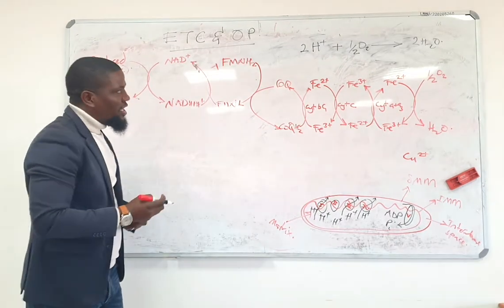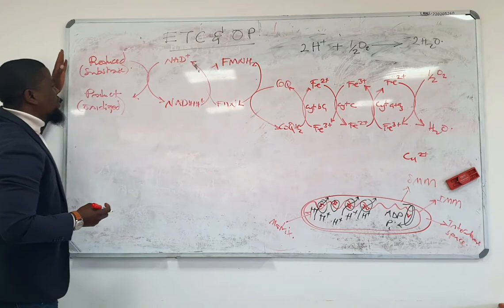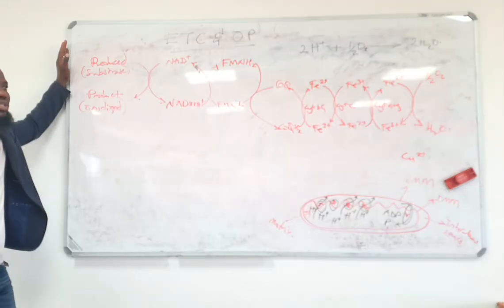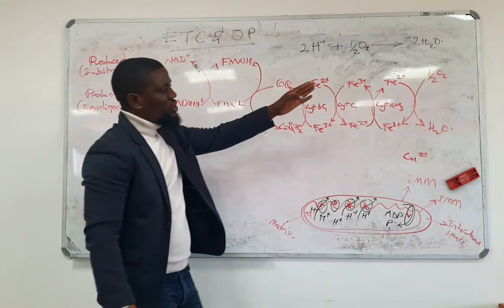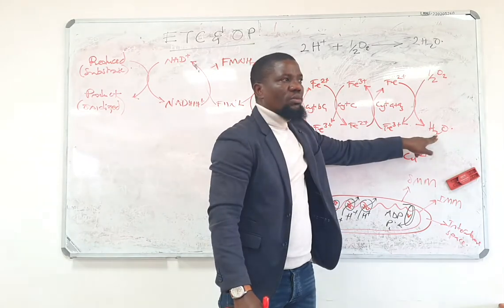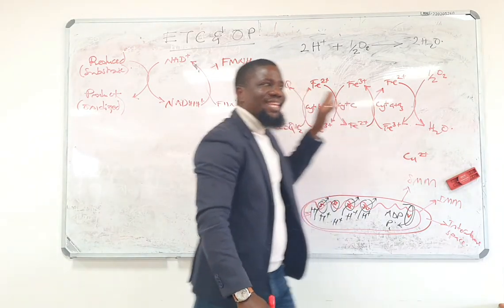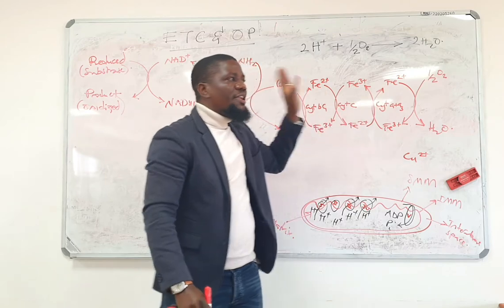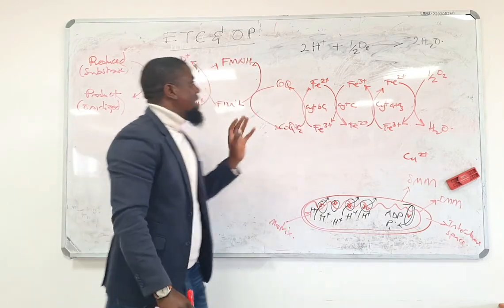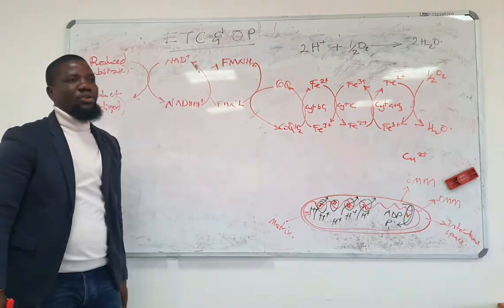Guys, in a nutshell, this is how hydrogens would move from a reduced substrate onto oxygen to produce water. This is the electron transport chain if you are dealing with an NAD-linked dehydrogenase.